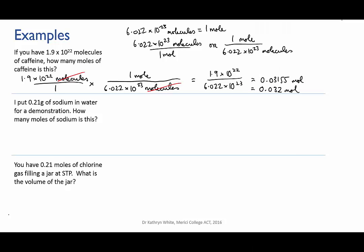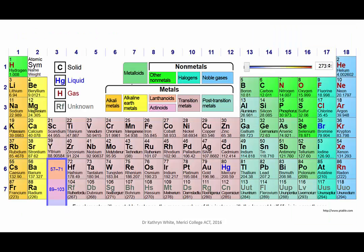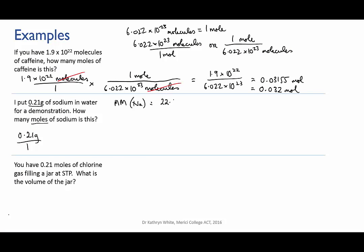So let's try the next example. We're given a mass of sodium, 0.21 grams, and we're asked to convert this to moles of sodium. I'll first write down what I know—there's my mass. Now I want to convert from mass to moles, so the conversion factor that I'm going to need is the molar mass. I need to go to the periodic table and find sodium and find the molar mass of sodium, which is 22.989 grams per mole.